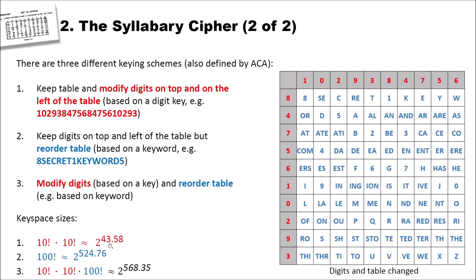In the second keying scheme, we keep the original digits but we reorder the content of the table. If we would do this completely random, we had 100 cells and we have to put 100 elements into these table cells. This is also factorial. So this means we have 100 factorial, which is about 2 to the power of 524.76. So the reordering key space or the amount of possibilities to reorder the table is very huge.